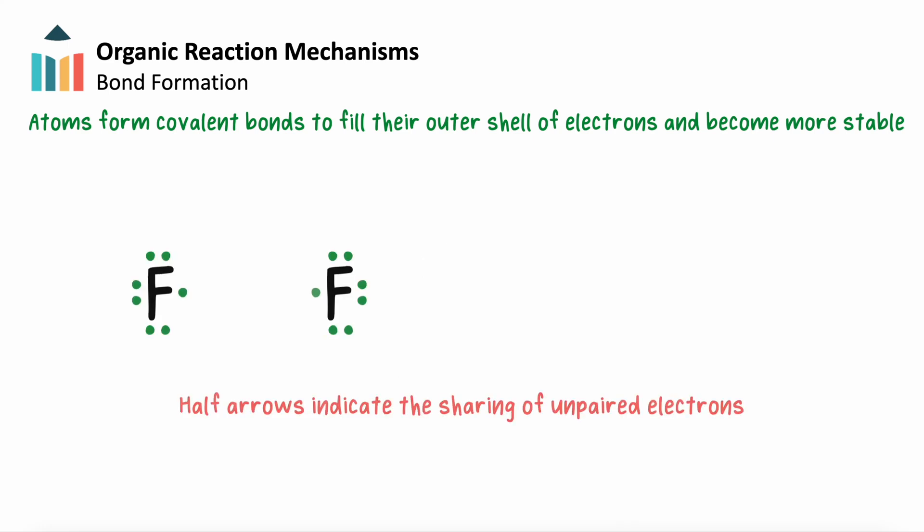When we draw reaction mechanisms, the sharing of unpaired electrons is indicated by a half-arrow, or a fishhook, from each of the reacting radicals. The other valence electrons, called lone pairs, don't usually need to be drawn since they're not participating in the reaction.